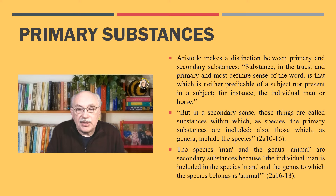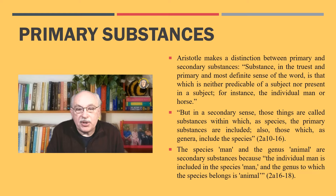Chapter 5 is wholly dedicated to examining the first in the line of categories, namely the category of substance. Here Aristotle makes his essential distinction between primary and secondary substances. I quote, 'Substance in the truest and primary and most definite sense of the word is that which is neither predicable of a subject nor present in a subject — for instance, the individual man or horse.'